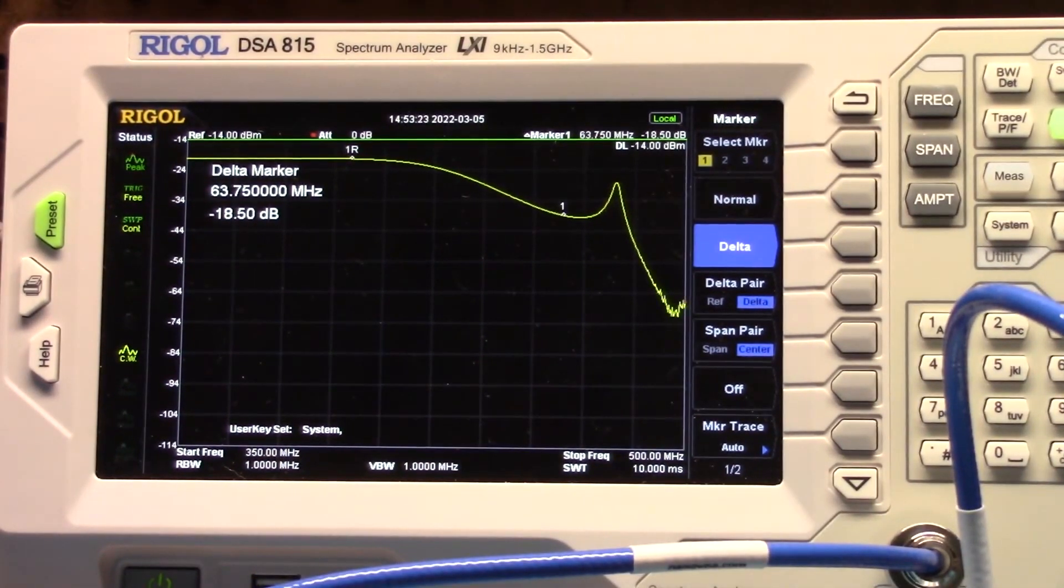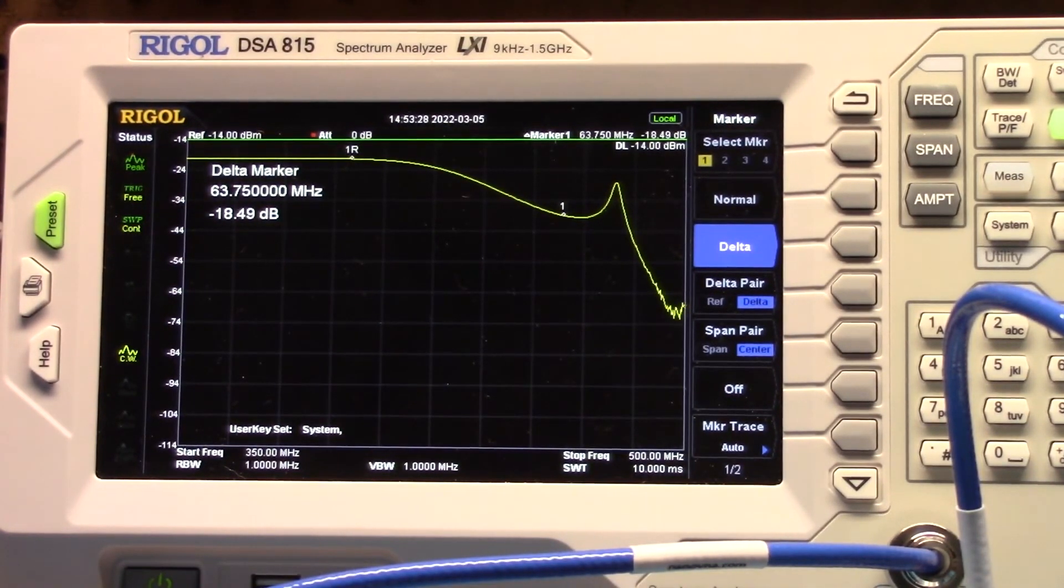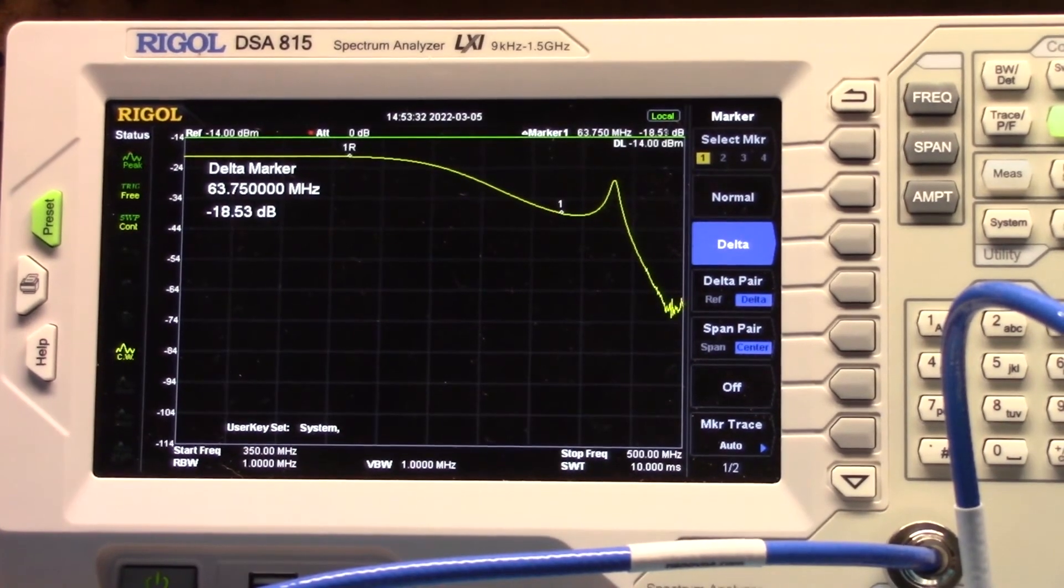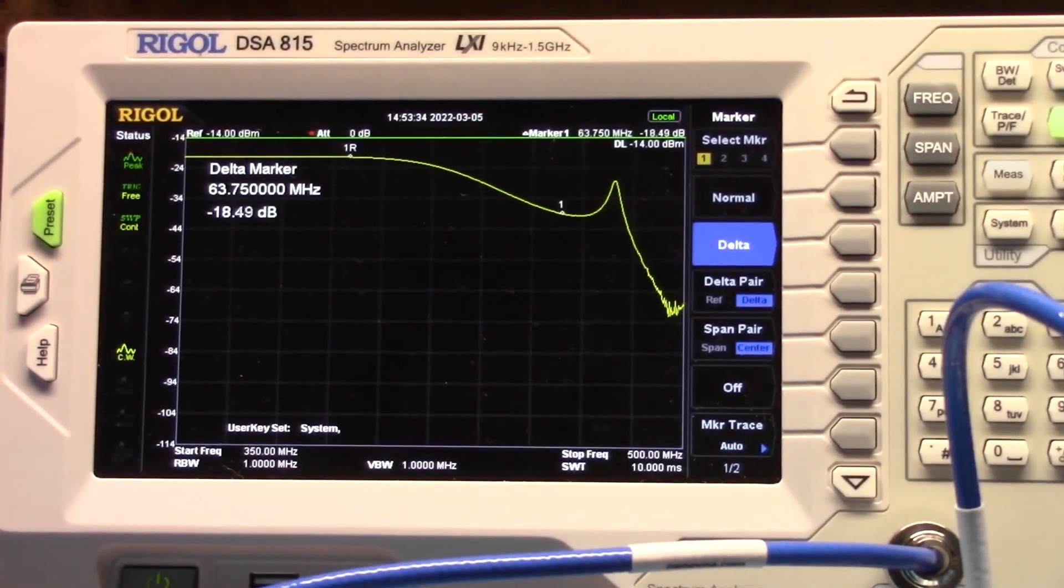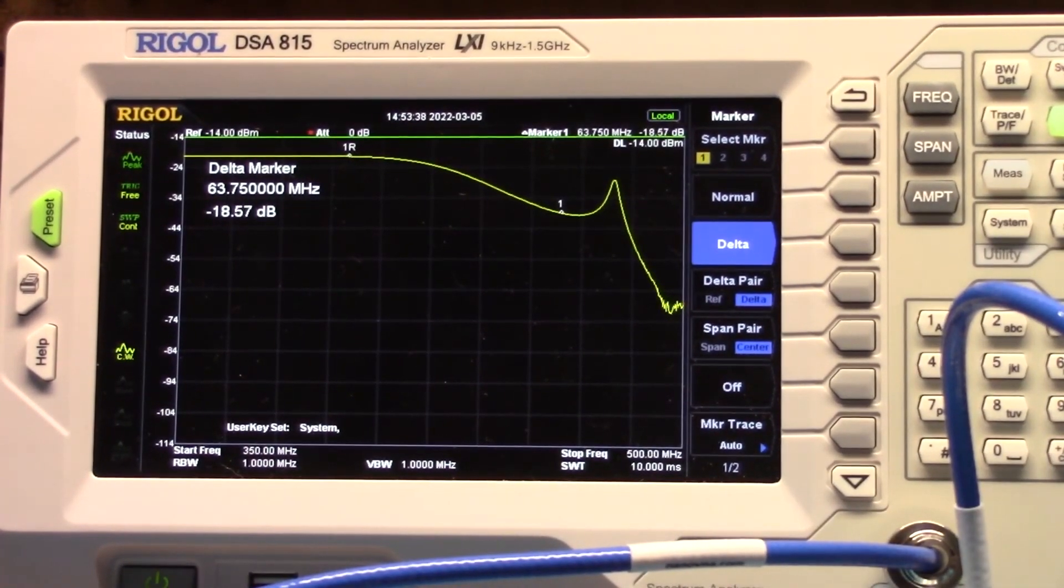So this is our low-pass filter. Anything below 400 megahertz is going to go through, and as we get above 400 megahertz, we're now clamping that off. So those frequencies are not going to pass. Low-pass is what we're looking at.